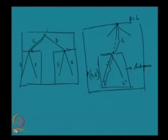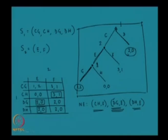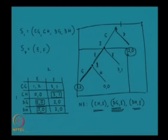Let us take another game — this one I have drawn before. How many subgames are there? I claim there are also three subgames. The first is the game itself after history φ. Then there is a subgame after history C. And there is a subgame after the non-terminal history CE. So here I have three subgames, and these proper subgames are subgames of each other.